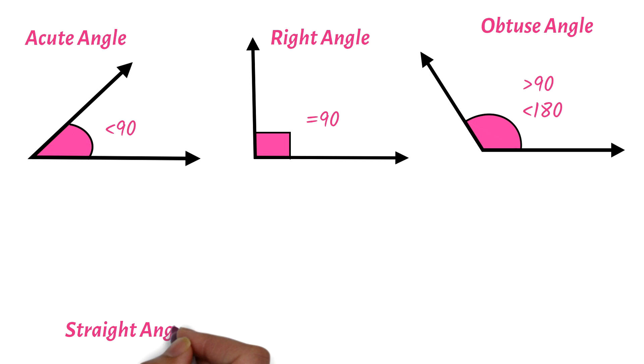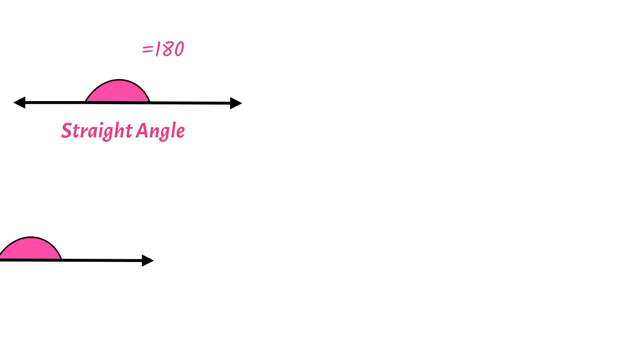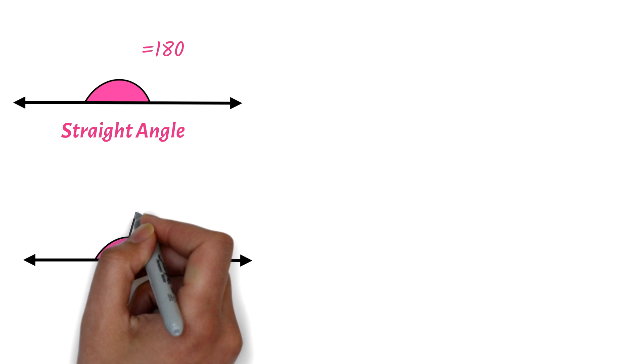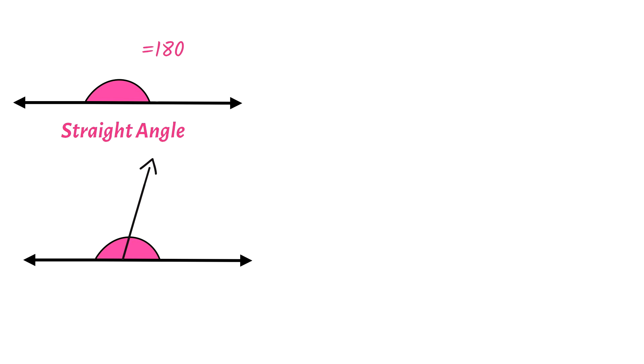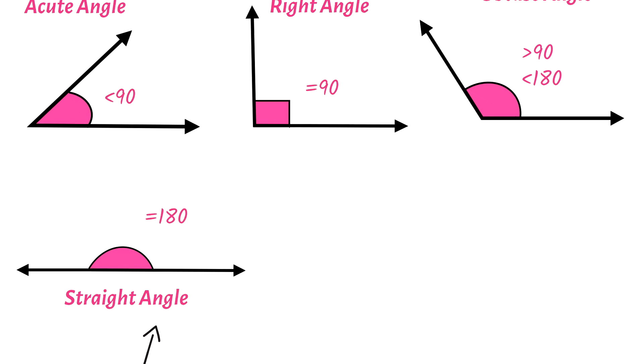The angle on a straight line or a straight angle is 180 degrees. So here, if we divide this angle this way, and call this angle A and this angle B, then angle A plus angle B will be 180 degrees. This is very important. We will be using it later.